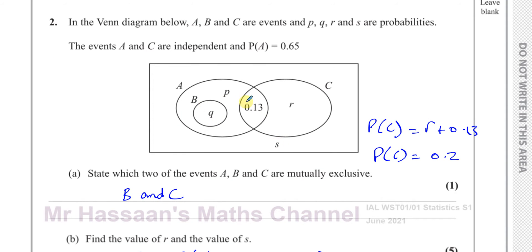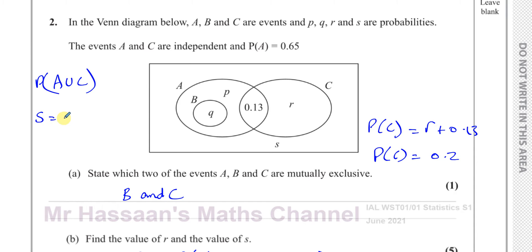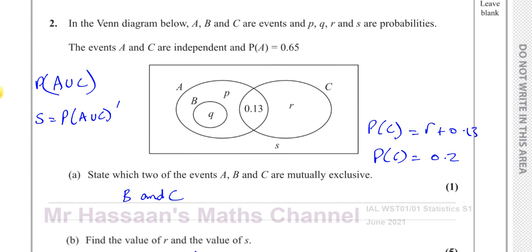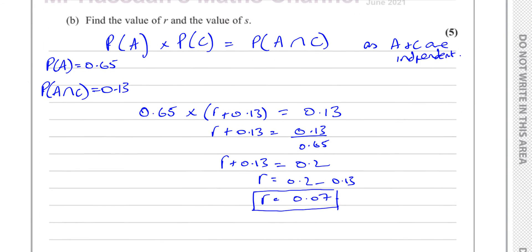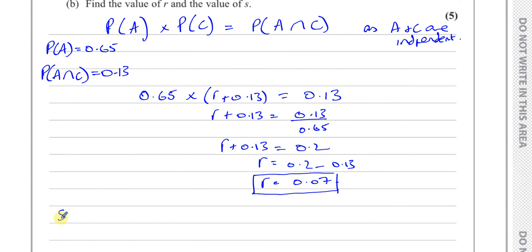S is outside of both A and C, so S equals the probability of (A ∪ C) complement — everything outside of A and C. We need to find P(A ∪ C) first.